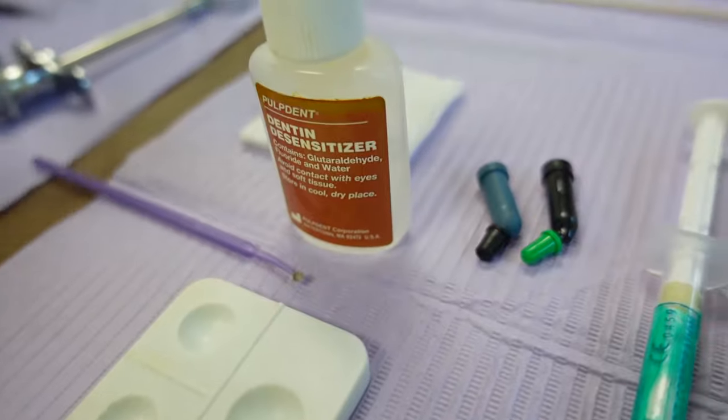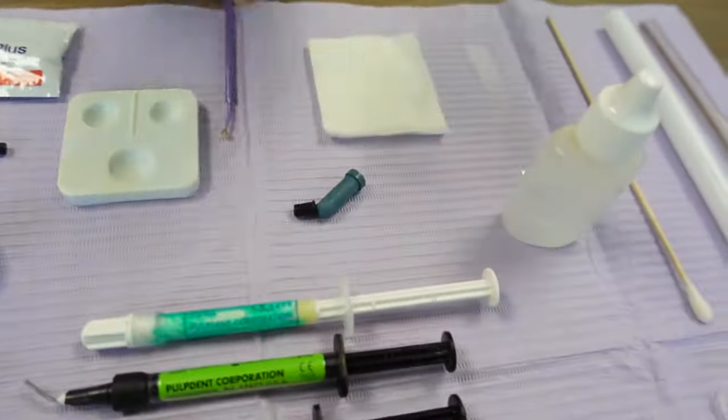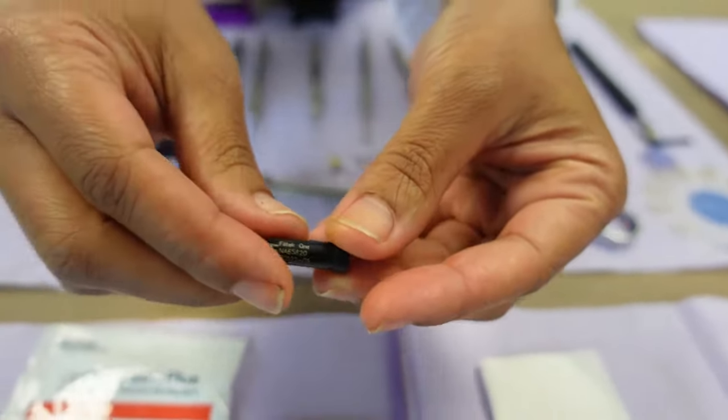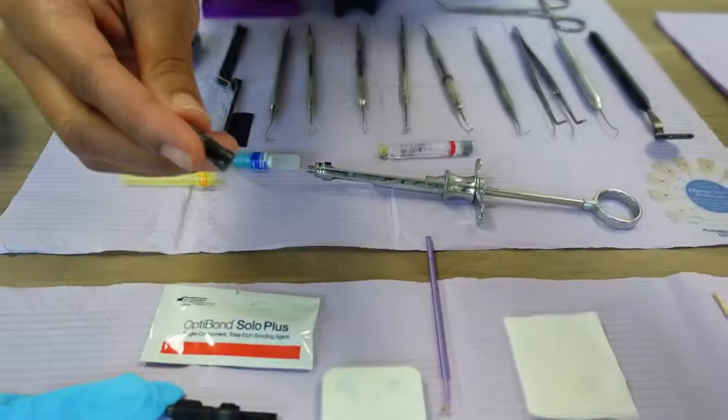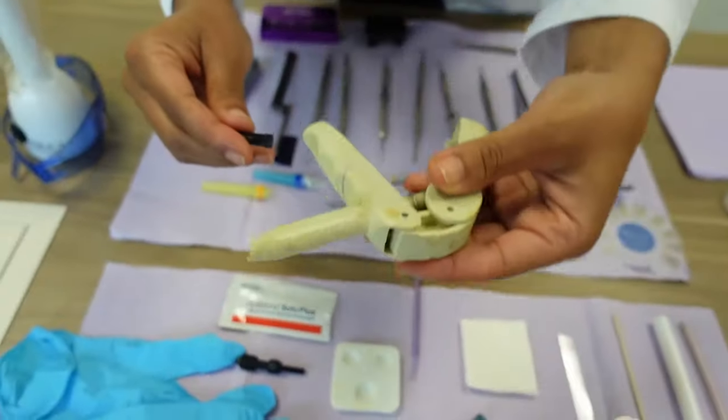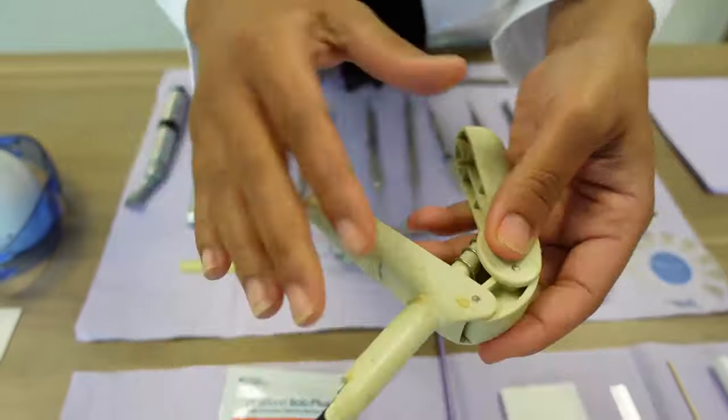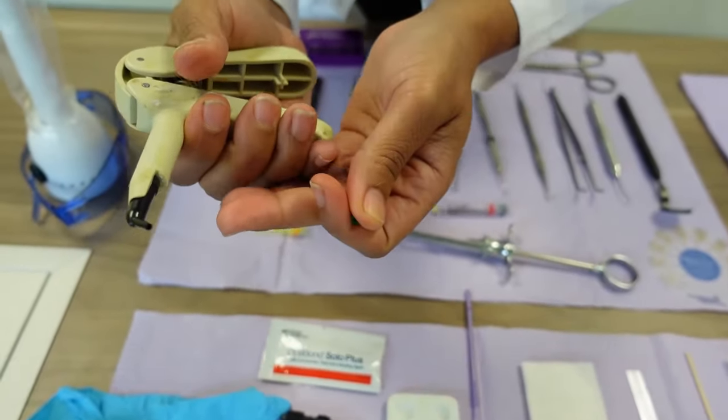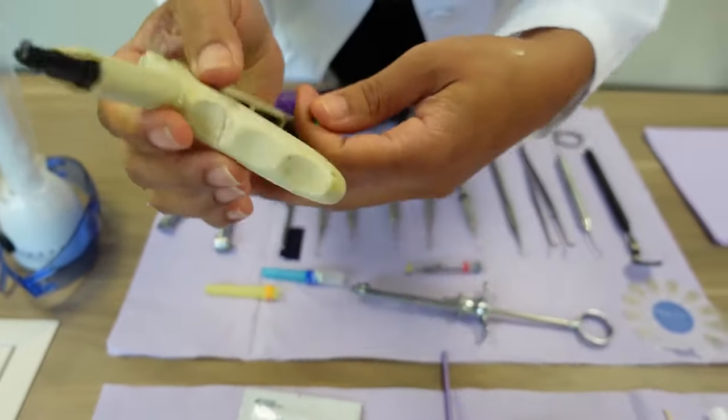This is actually a composite capsule—of course it says B1 because there are different shades of composite. Now I'm going to bring this over here, which is a composite gun. I'm going to snap it in. That's how you put it in. You take the cap off, press it a little bit just to get a little bit out because the doctor likes to test it. Hand it to the doctor so it comes out smoothly.